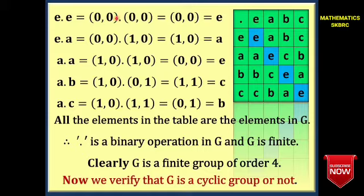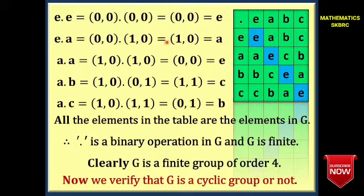E·E: (0,0)·(0,0) = (0+0, 0+0) = (0,0) = E. So E·E = E. E·A: (0,0)·(1,0) = (0+1, 0+0) = (1,0) = A. So E·A = A.